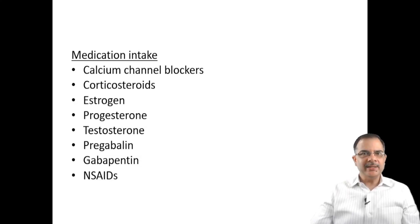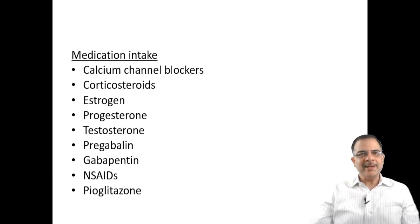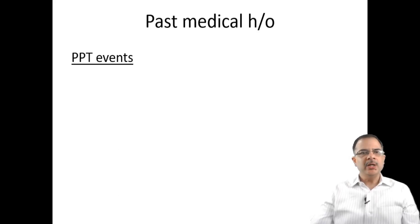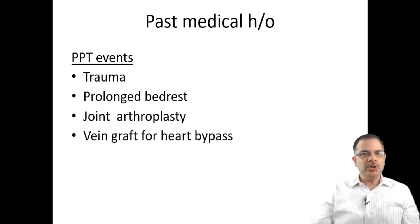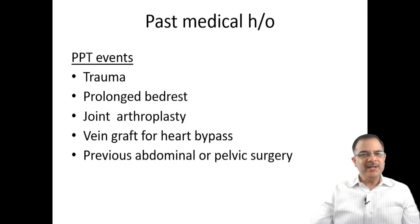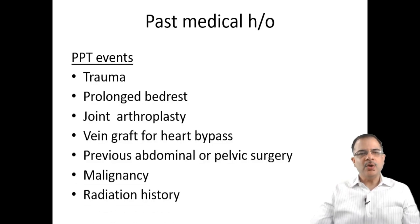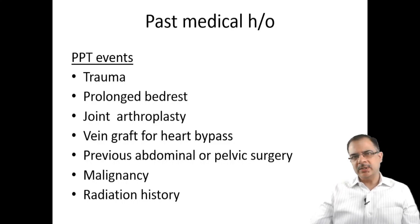NSAIDs cause bilateral swelling by decreasing GFR. Pioglitazone is known to cause edema. Past medical history should include precipitating events such as trauma, prolonged bed rest, joint operations, venous grafts for heart bypass, previous abdominal or pelvic surgeries, malignancy, or radiation history — all of these provide clues to the underlying or precipitating cause.